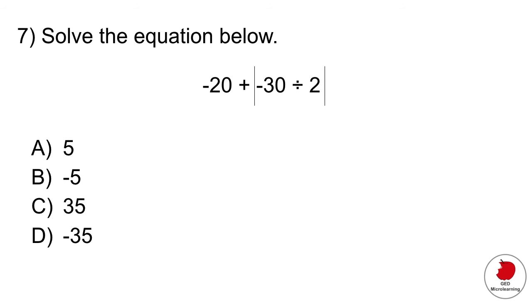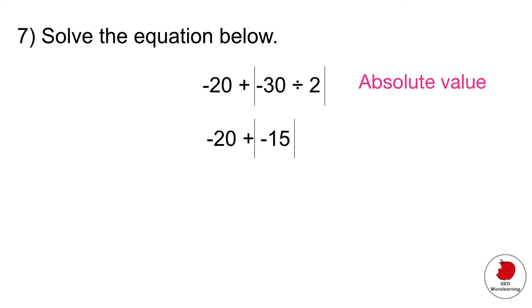This next question looks at absolute values. Whenever you see any number surrounded by those two lines, that is an absolute value. And what that tells you is that whatever is inside those two lines is going to turn positive. So first, let's solve whatever is inside that absolute value. So minus 30 divided by two would be minus 15. And because it's inside that absolute value, that minus 15 is going to become positive 15. So that's what it's going to end up, minus 20 plus 15, which is equal to minus five.